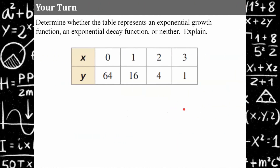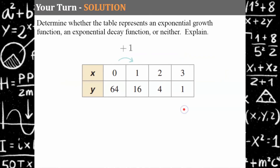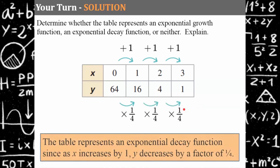Try this one — please pause and come back when you're ready. Welcome back. As x increases by 1, y decreases by a factor of one-fourth. Therefore this table represents an exponential decay function, since as x is increasing by 1, y decreases by a factor of one-fourth.